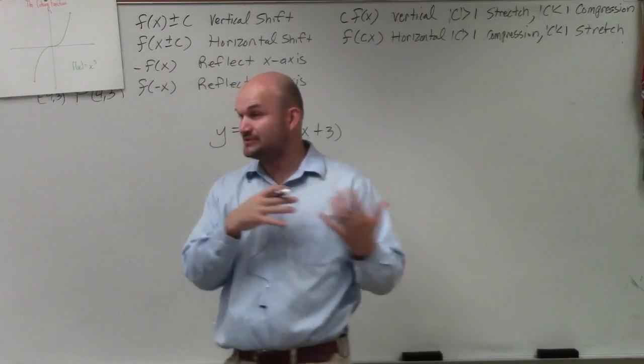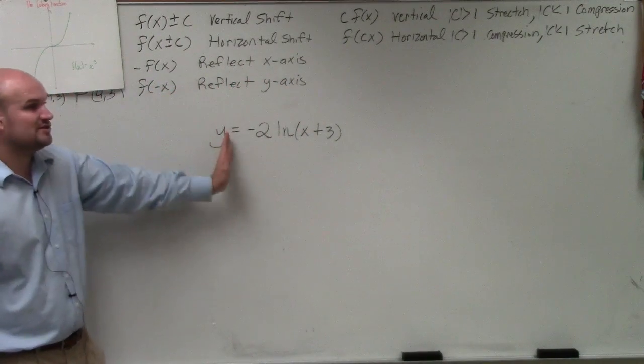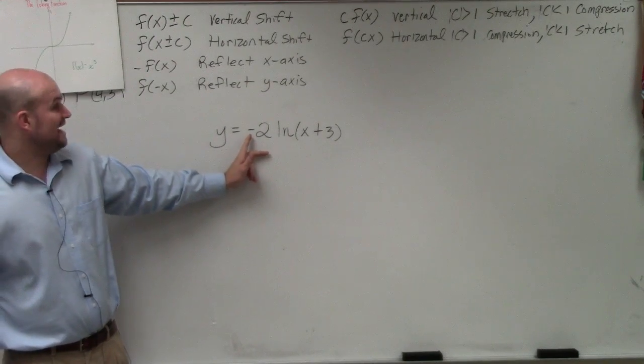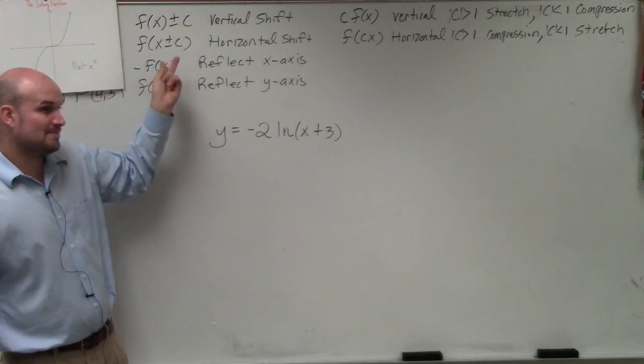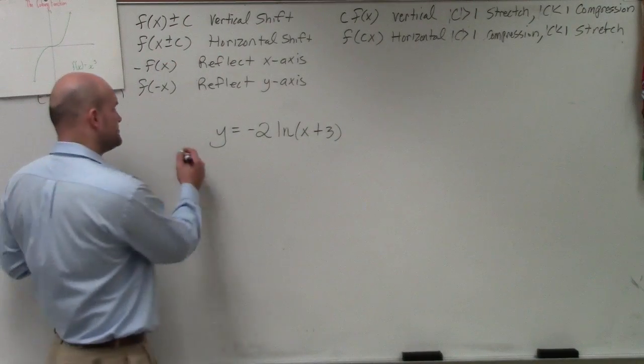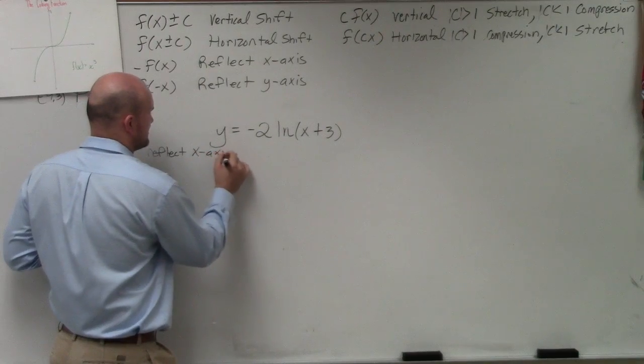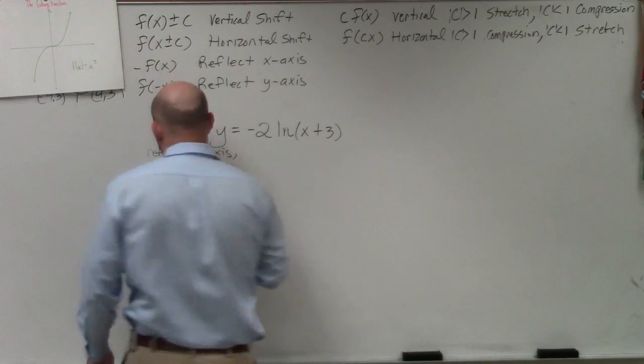So just reading this from left to right, I can see that the first thing I'm doing is multiplying my function by a negative. Now is that negative inside my function or outside my function? Outside. So I'm just going to write reflect x-axis. That's one transformation.